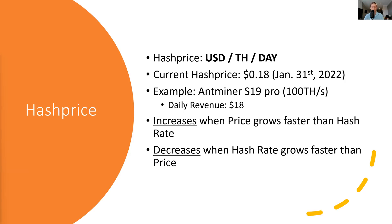A quick example to see how much revenue an AntMiner S19 Pro is going to generate per day — you can do this for any machine. Basically, what you would do is find the specs of that machine. For example, an S19 Pro is going to be running at roughly 100 terahash per second. The daily revenue that this machine would generate would be $18. You find this by simply multiplying the current hash price by the number of terahashes per second the machine can produce.